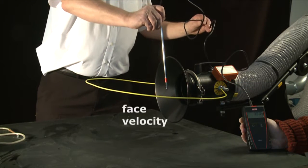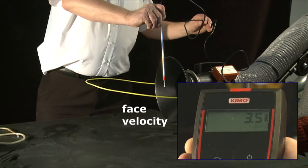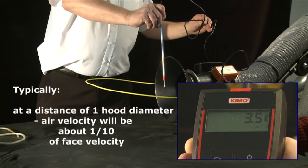The velocity at the face of the hood is 3.5 meters per second. Typically, at a distance of one hood diameter, the air velocity will be about a tenth of the velocity at the face of the hood.